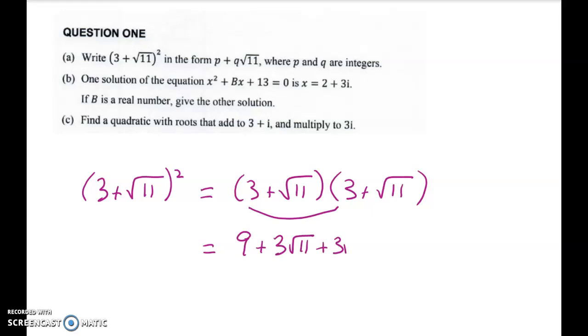So we get 9 plus 3√11 plus 3√11, and then when we multiply these two we just get plus 11. That gives me 20 plus 6√11.